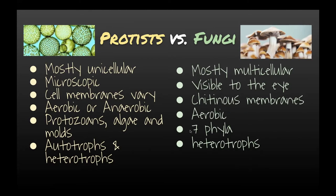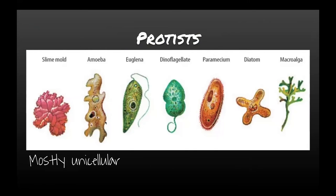Here are some pictures of protists—they come in all sorts of different shapes. You've probably seen diatoms, macroalgae, amoebas, and slime molds. These are mostly unicellular organisms, with a few exceptions. A lot of times, organisms that don't really fit into other kingdoms get placed into protists because they are so varied and there's a very diverse collection of what's considered a protist.